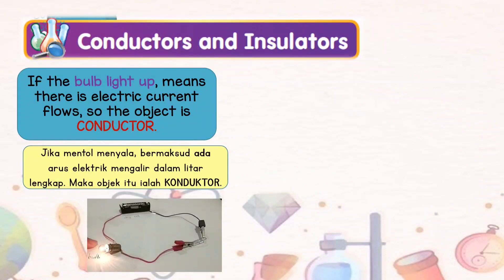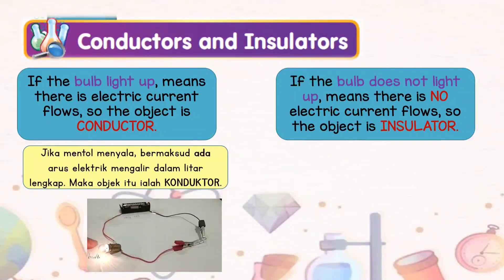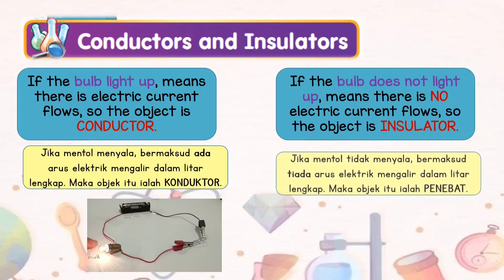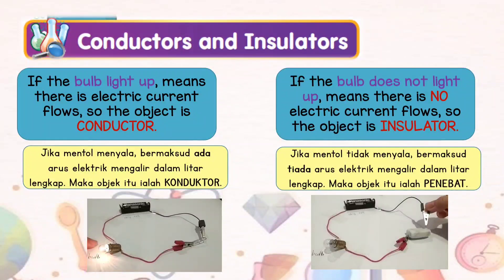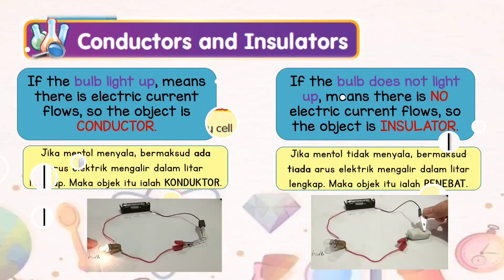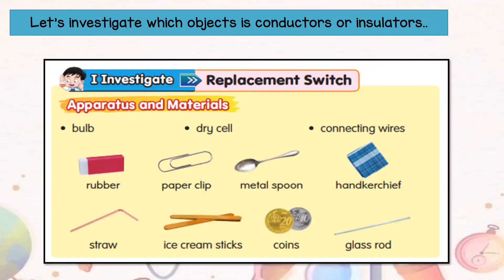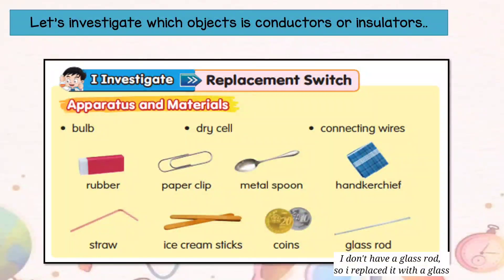However, if the bulb does not light up, it means there is no electric current flowing, so the object is an insulator. Now, let's investigate which objects are conductors or insulators. We will replace the switch with objects and materials.